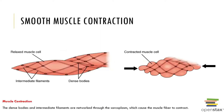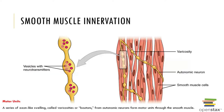Here's a look at a relaxed muscle cell on the left, and then a contracted muscle cell on the right — that's smooth muscle. Smooth muscle is an involuntary muscle, as we learned about in anatomy and physiology 1.